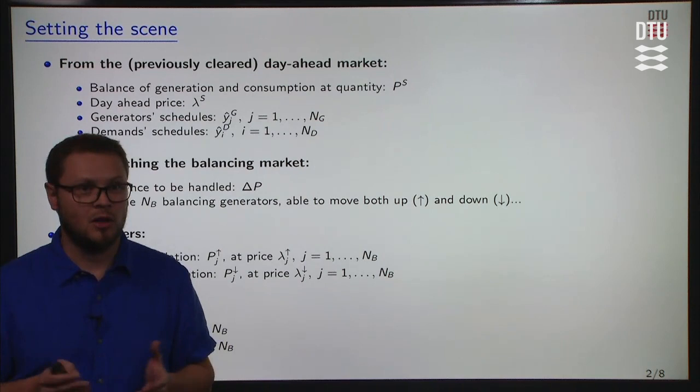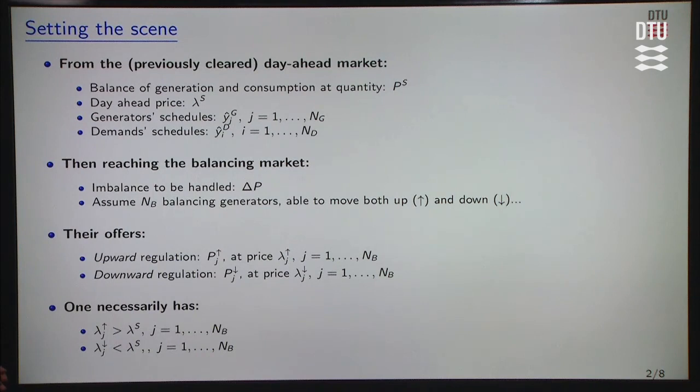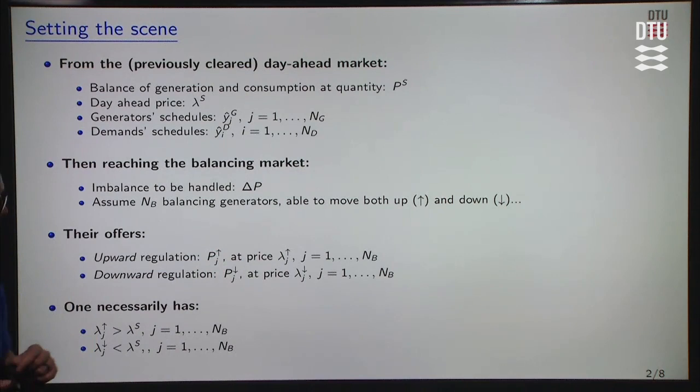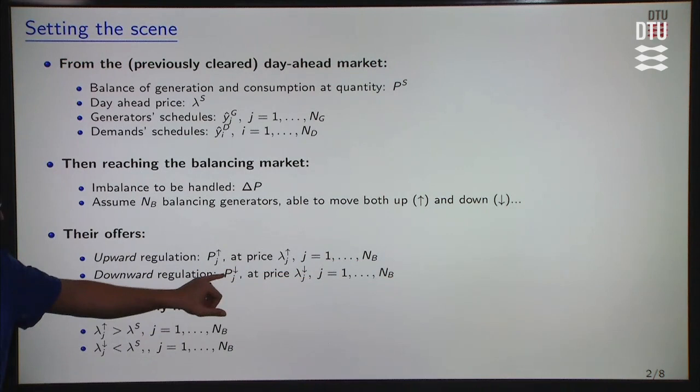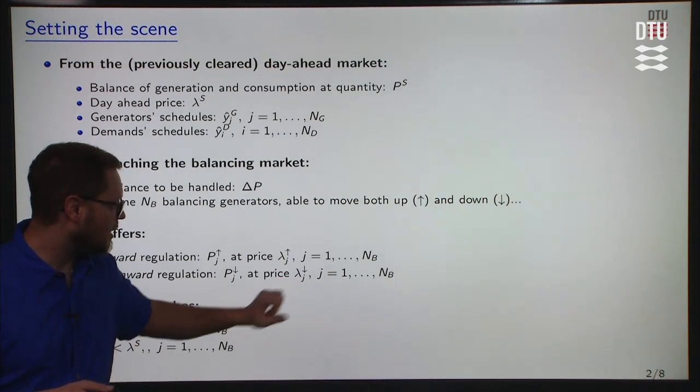In terms of offers, balancing generators will propose upward regulation offers, denoted p_j with an upward arrow at a price lambda_j with an upward arrow, and we have NB of these offers. On the other side we have downward regulation offers, p_j with a downward arrow at price lambda_j with a downward arrow. Again we have NB of these offers.